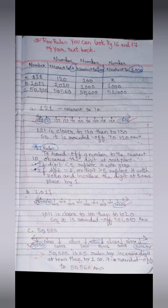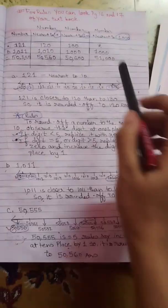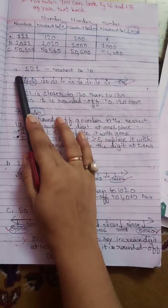What is rounding? Rounding means making a number smaller or larger. When we round to the nearest tens, we look at the ones place. If the number is 5 or more, we move up; otherwise we move down. Let us look at example 1.